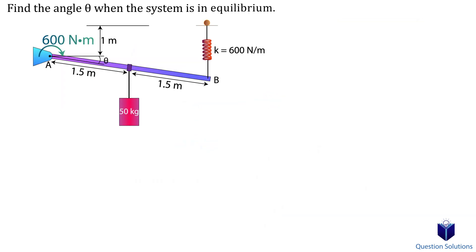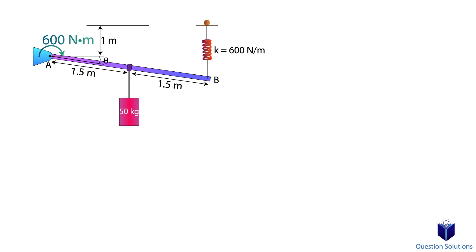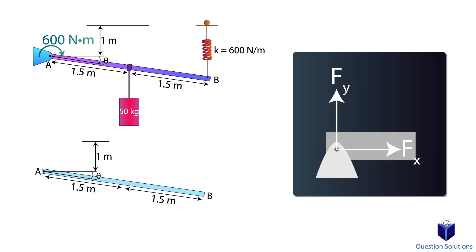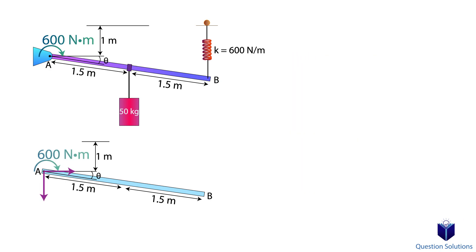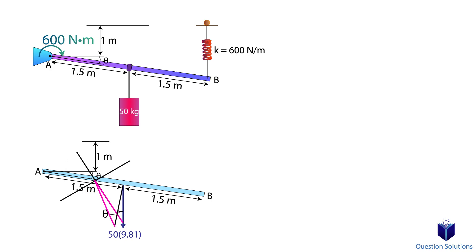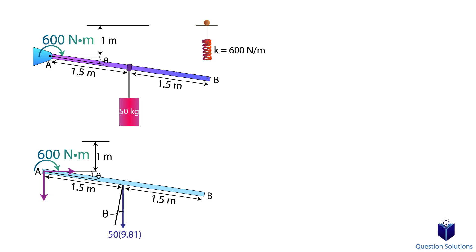Let's take a look at one last example. We have a weight attached to a rod: on one end it's pinned, and at the other end we have a spring. We need to figure out the angle created when the system is in equilibrium. First, we draw a free body diagram. At pin A, we have two reactions, and we also have a moment applied at A — note this moment is not created by other forces; it is something that was manually applied. We also have the weight of the cylinder, which is mass times the acceleration due to gravity, and the force of the spring acting straight upward.